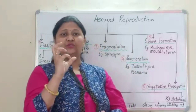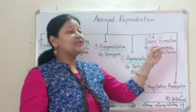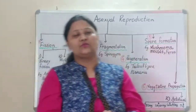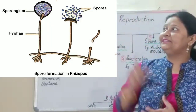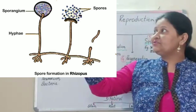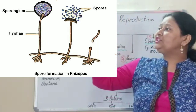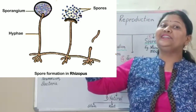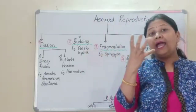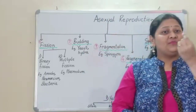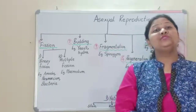Now coming to the fifth type: spore formation. A spore is a spherical structure used for reproduction. Examples are mushrooms, molds, ferns, and mosses. In this process there is a structure known as a sporangium, as you can see in this figure. Inside the sporangium there are small spores. Once favourable conditions arise, the sporangium bursts and the spores are released into the air. The spores are so lightweight that from these tiny spores, a whole new organism can develop.